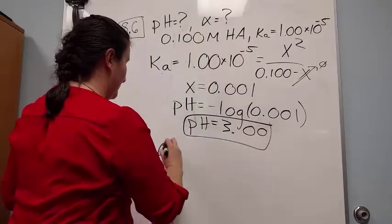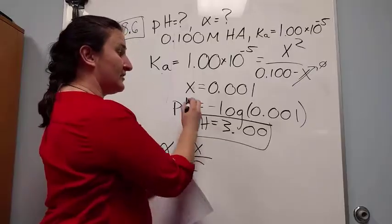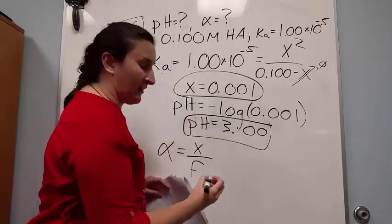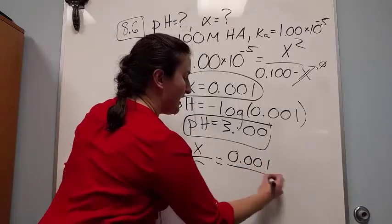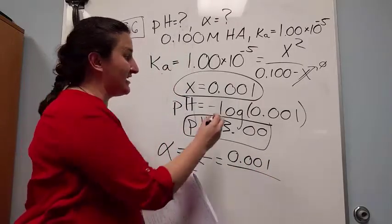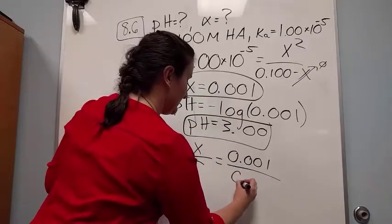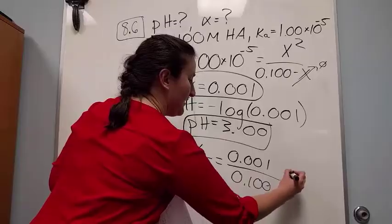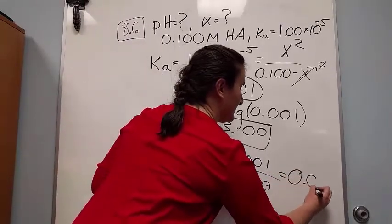So my alpha then, remember, equals x over my F. So I literally just take my x that I found earlier, plug that in, 0.001, and that's because this x stands for hydrogen ion concentration, as does this one, over my F, which in this situation is 0.100. So my alpha equals 0.01.